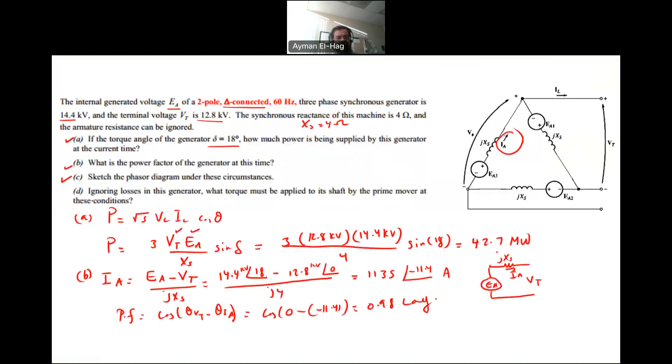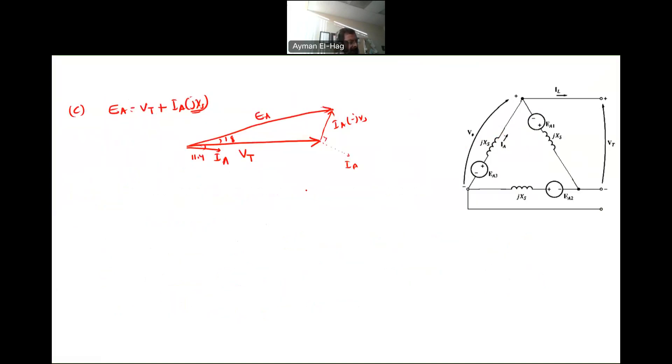Now, the last part: ignoring the losses in the generator, what torque must be applied to its shaft by the prime mover? So if there is no losses, then the power that you are dealing with is the same. P is constant.